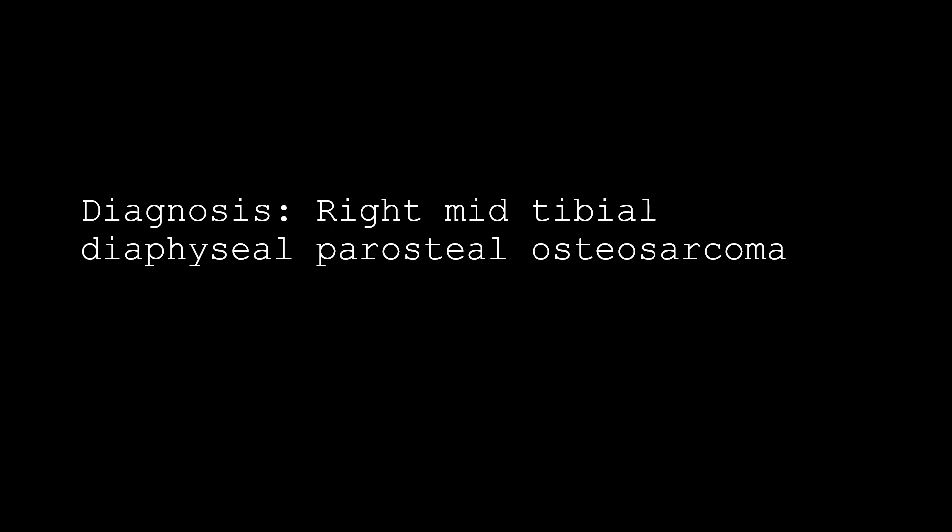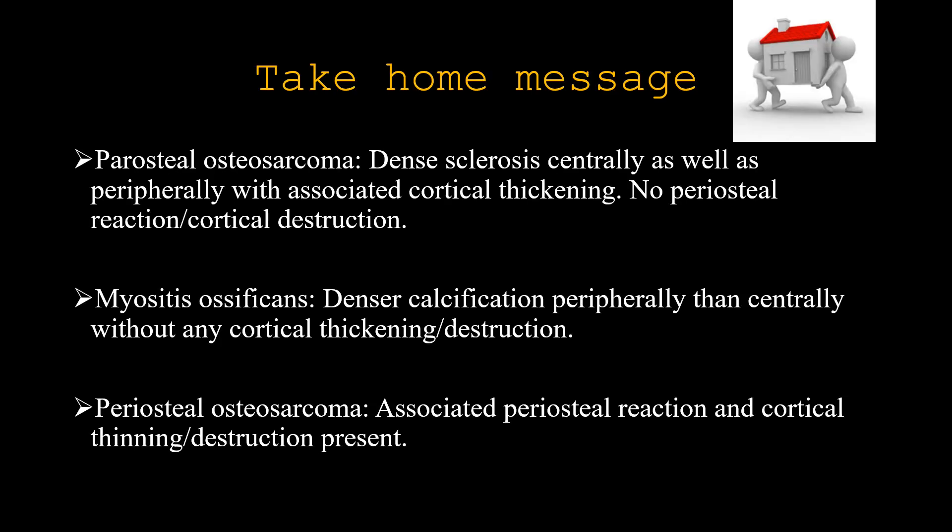Our diagnosis is right mid-tibial diaphyseal parosteal osteosarcoma and this was confirmed on histopathology. The take-home messages: in parosteal osteosarcoma, there is dense sclerosis centrally as well as peripherally with associated cortical thickening, and there is no periosteal reaction or cortical destruction. Whereas in myositis ossificans, there is denser calcification peripherally than centrally without any cortical thickening or destruction.